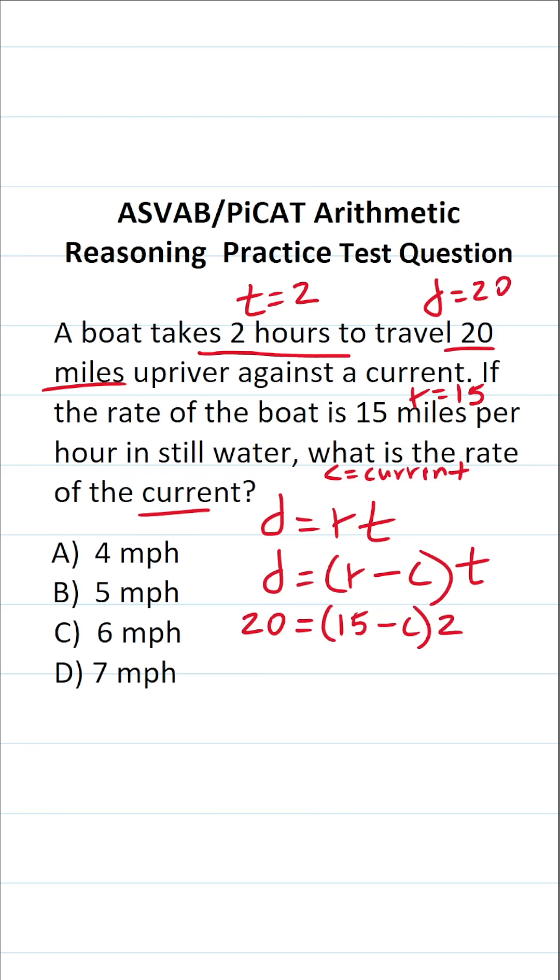As you can see, we can now solve for the letter variable C to get our answer. The first thing I'm going to do is divide both sides of this equation by two. This crosses out, leaving you with 15 minus C over here. 20 divided by 2 is 10.